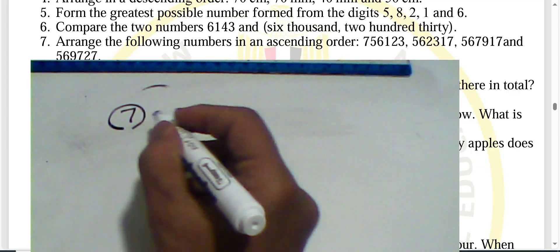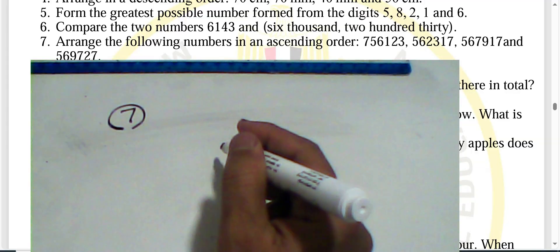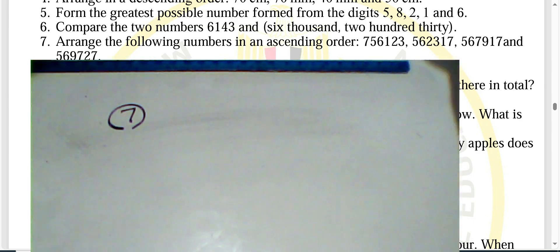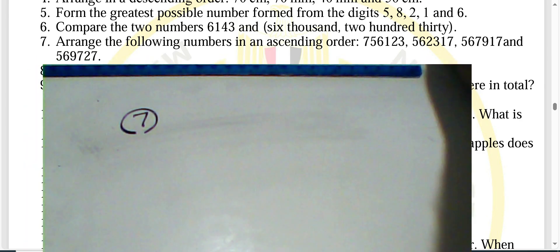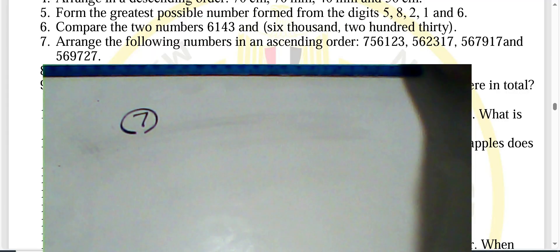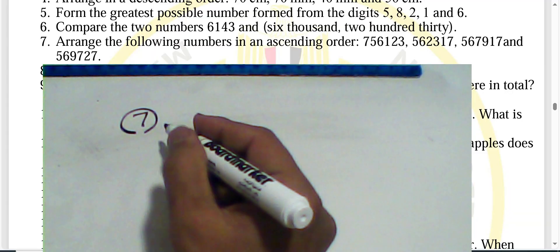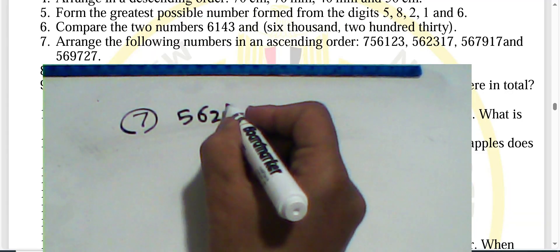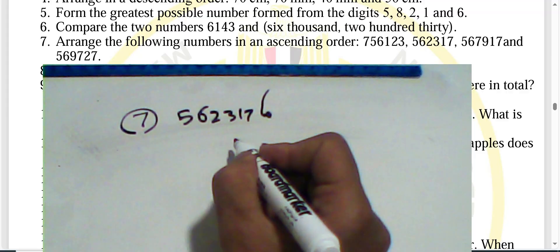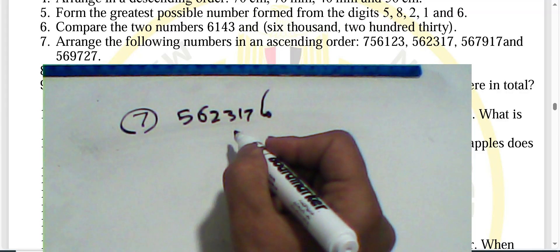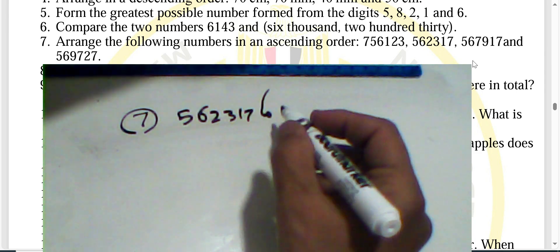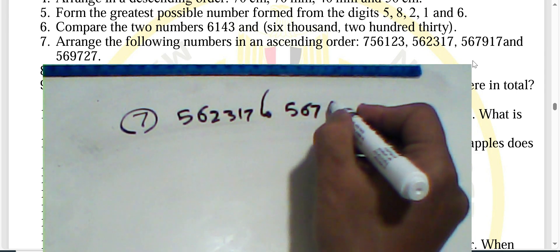Question seven: arrange the following numbers in ascending order from smallest to greatest. All numbers have six digits starting with 56. The order starts with 56,217, then 317, then 567.